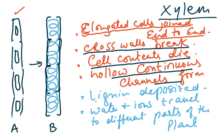What does the lignin do? The lignin strengthens the xylem so that water and ions can be sucked up. Some very tall trees require water to be sucked up many, many meters. So the lignin is deposited and water and ions travel up these tubes to different parts of the plant. The deposition of lignin is very, very important. Previously these were normal cells joined end to end, then the cross walls broke and cell contents died.